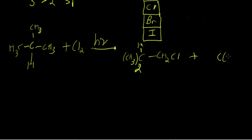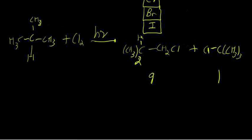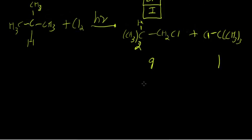The tertiary product has the three methyl groups with the central hydrogen replaced by chlorine. We also have to take into account that there are nine primary hydrogens but only one tertiary hydrogen. So statistical factors alone suggest that for every nine molecules of primary product, you'd get only one molecule of tertiary product. It turns out the actual product distribution is 64% primary and about 36% tertiary.